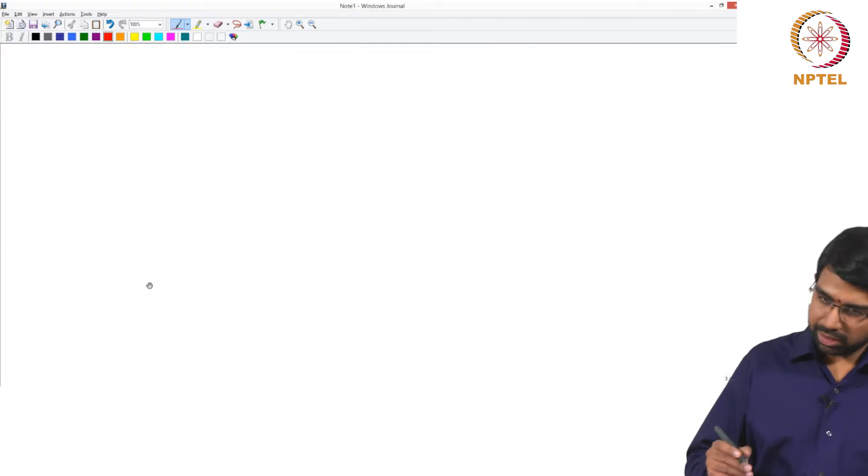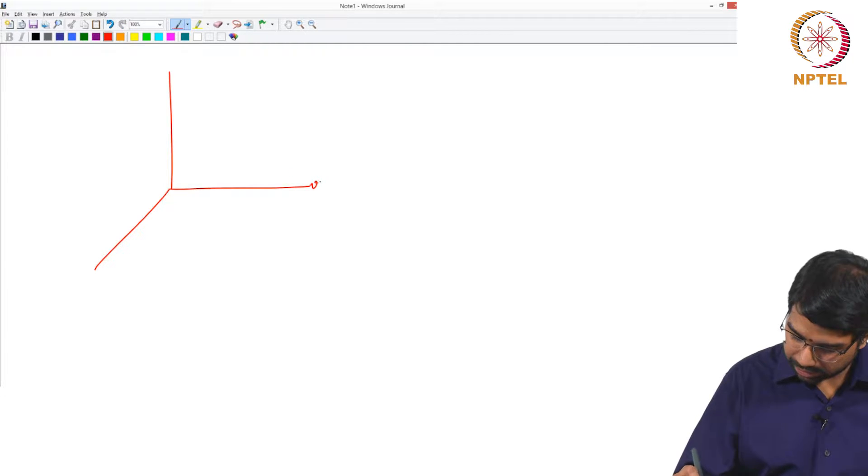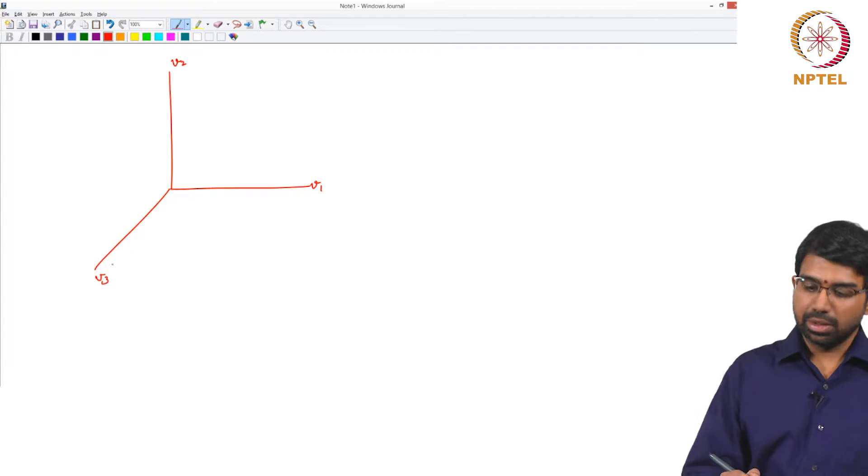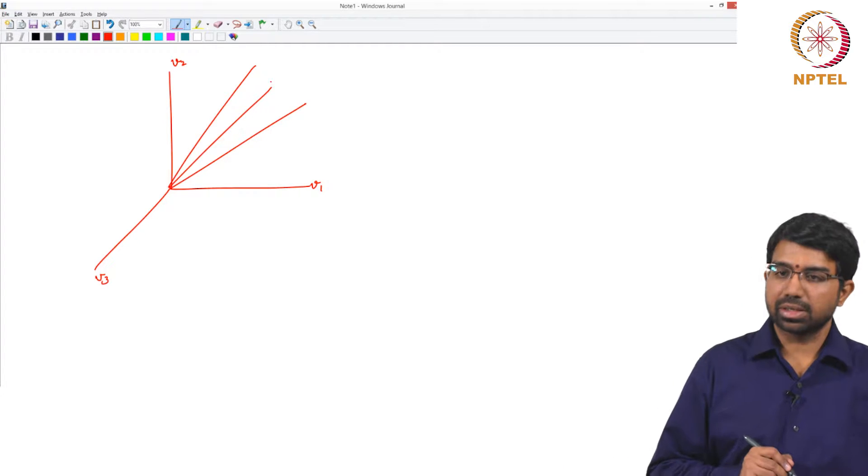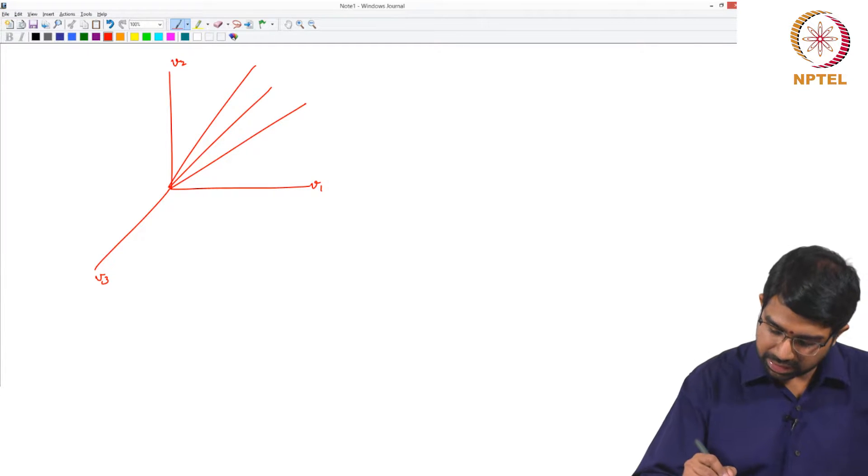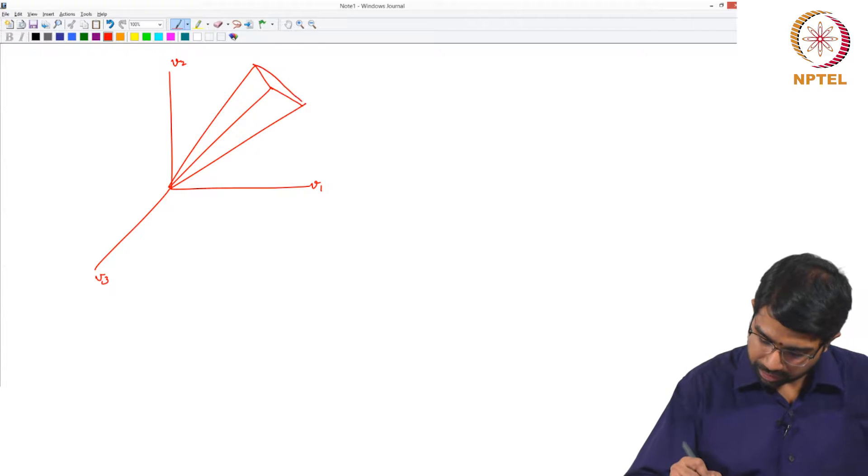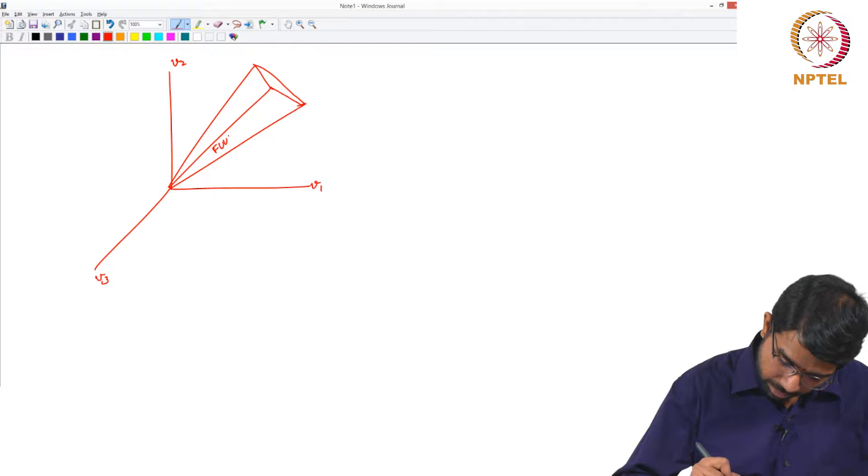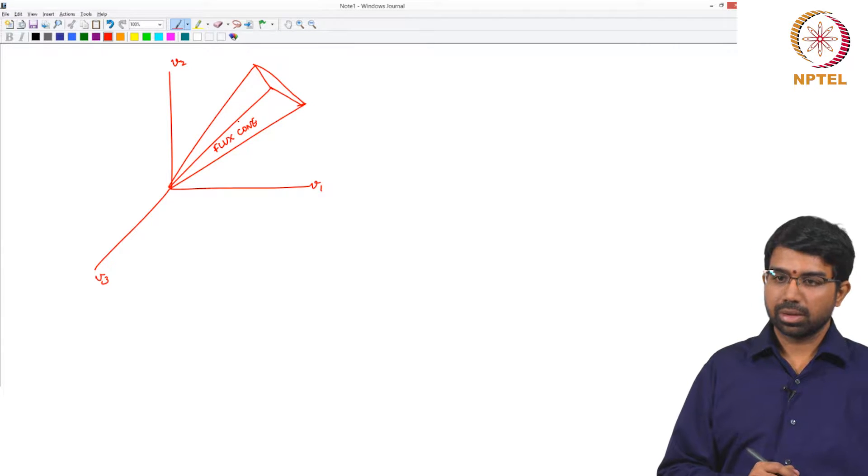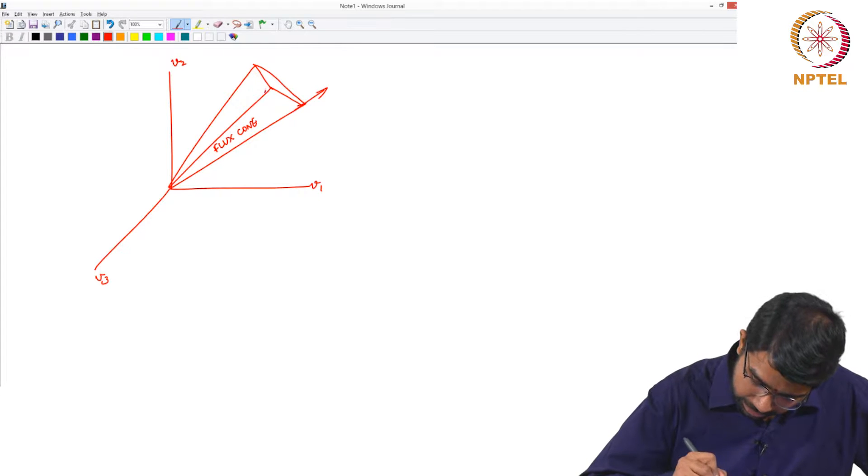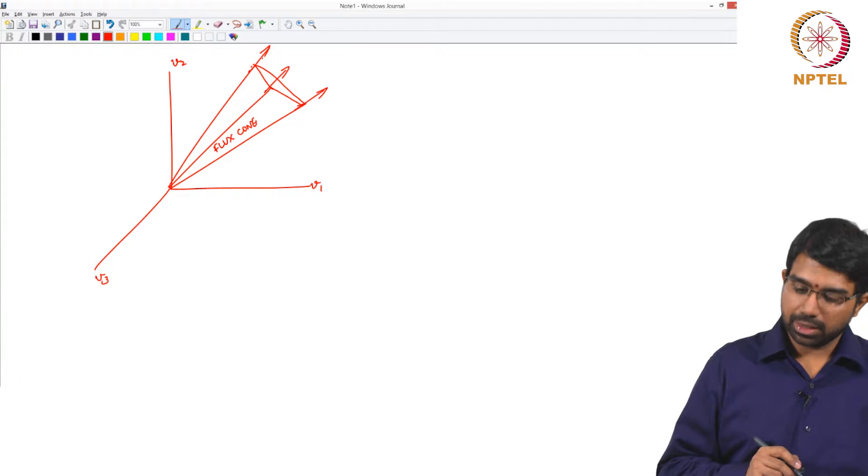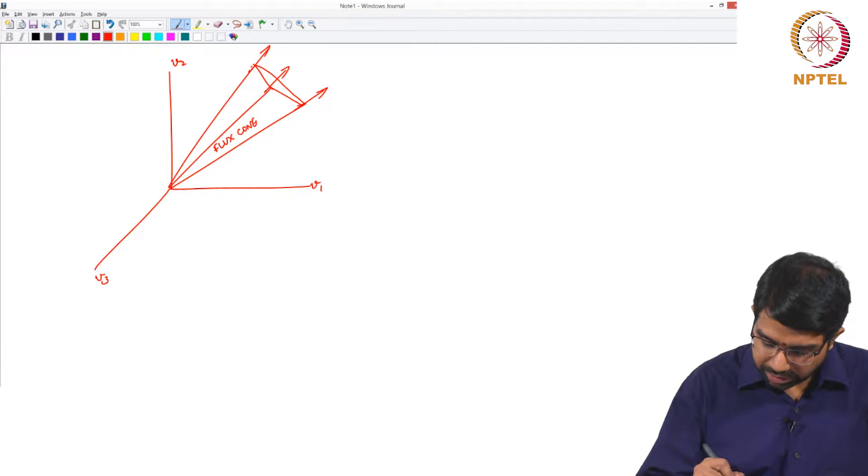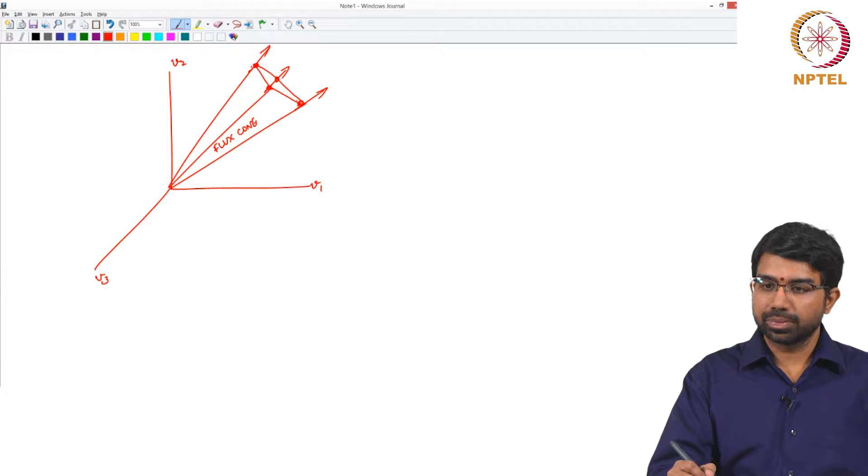So let us go back to the math of it. Where did we start in the previous module? Let us say this is V1, this is V2, this is V3. We put in some linear constraints here and these constraints will basically give you what is known as a flux cone. These are all your linear constraints and these are your possible solutions and if you have more constraints maybe one of these is the optimal point and so on.